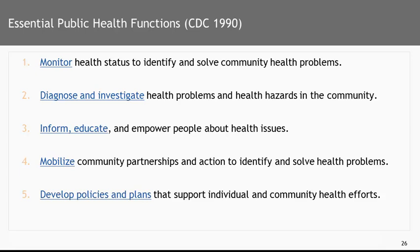I want to talk about how public health can tap into this in the context of the list of essential public health functions. This is a list that was started by the CDC in the 1990s — a list of 10 services that the CDC believes all public health units need to get done. The first is to monitor the health status of the population in order to identify and solve community health problems. This is called surveillance — knowing what the burden of disease is and what the health threats are.